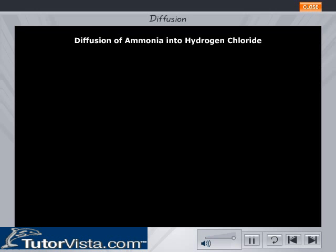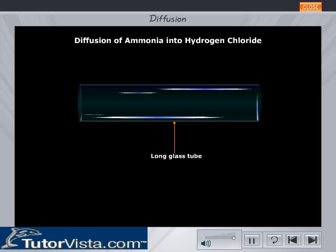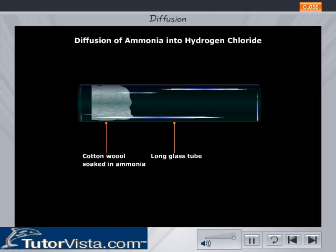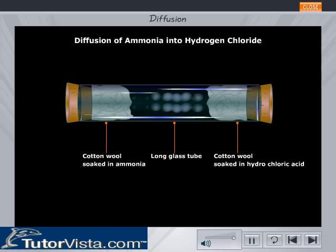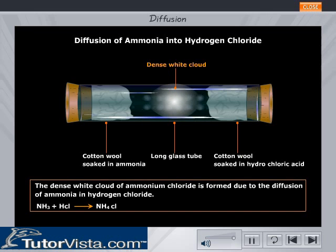Diffusion of ammonia into hydrogen chloride: Let us see how diffusion of two gases takes place and undergoes a chemical reaction. Take a long glass tube and plug end A with cotton wool soaked in ammonia, and end B with cotton wool soaked in hydrochloric acid. Seal the ends with rubber bungs. What do you observe? We observe a dense white cloud. The dense white cloud is formed due to the diffusion of ammonia into hydrogen chloride.